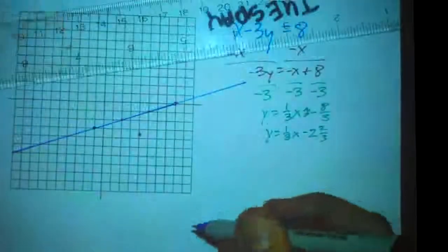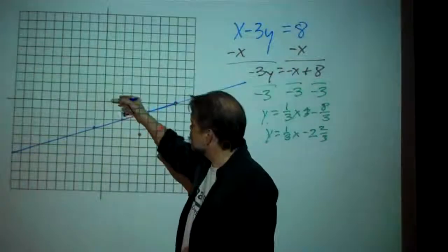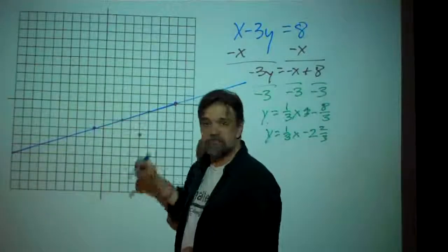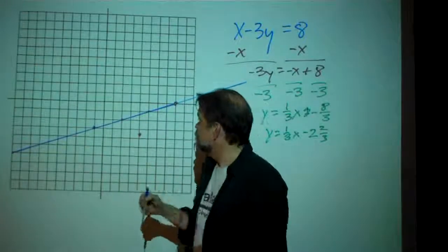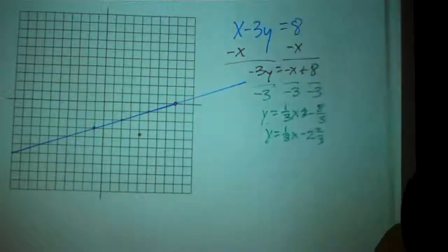So now I can see how this is going. All right, there's my line. And sure enough, I see that it's crossing the y-axis at 1, 2, negative 2 and 2 thirds. So good.